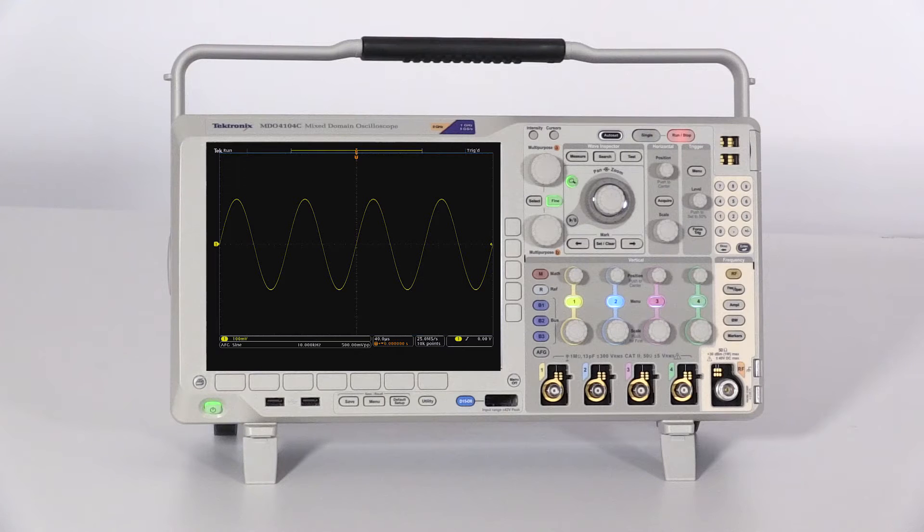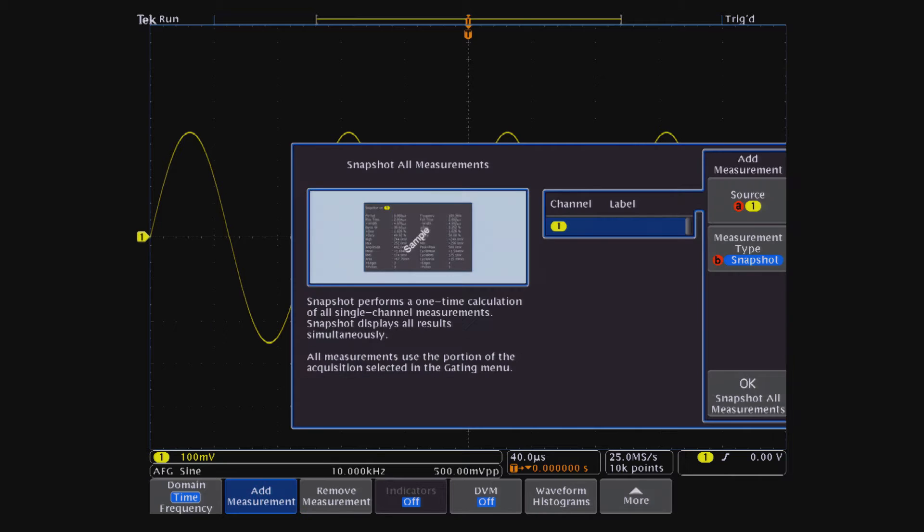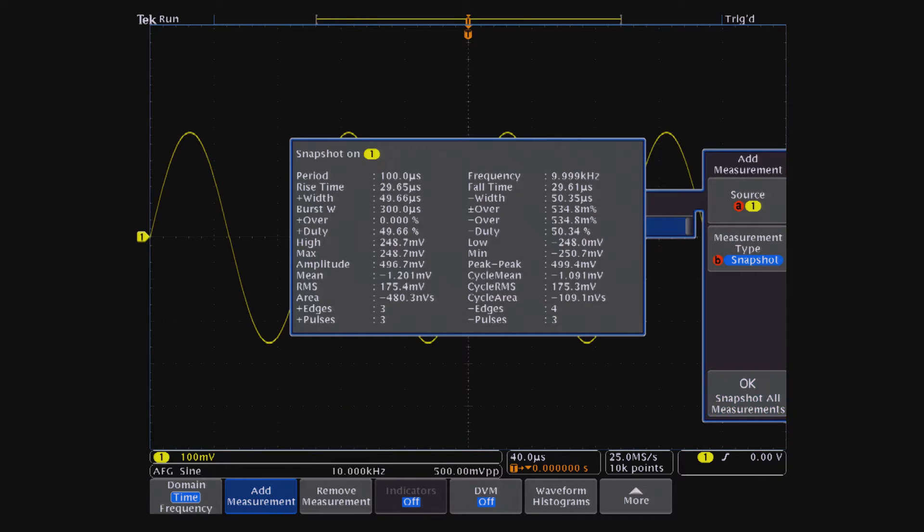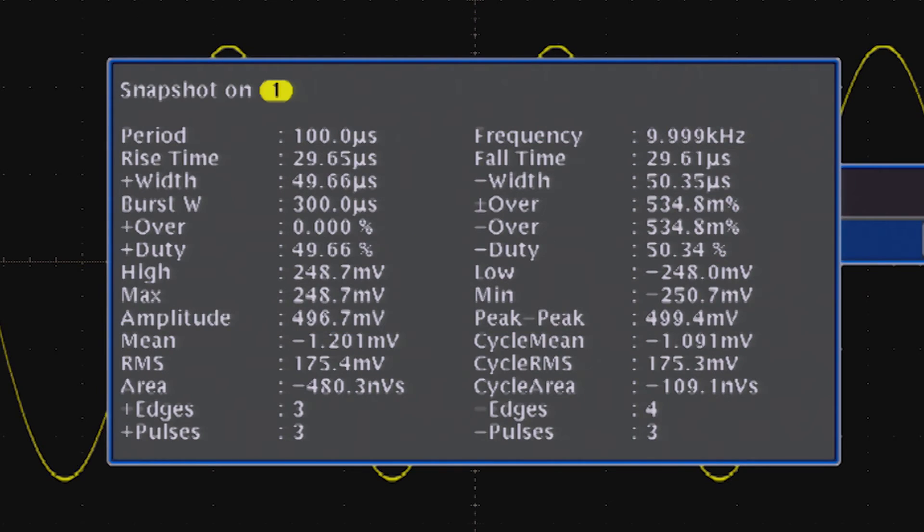Today, almost all oscilloscopes generate automated measurements by performing math on waveform data. Not all oscilloscopes use the same technique, however, which affects the precision and accuracy of the measurements.